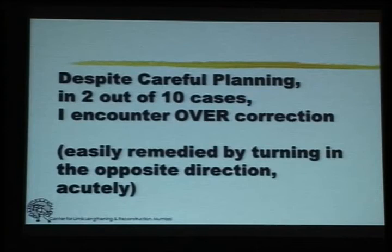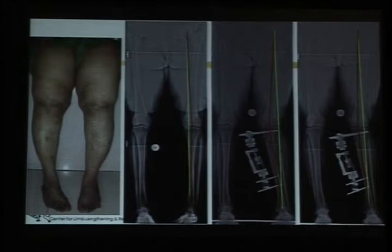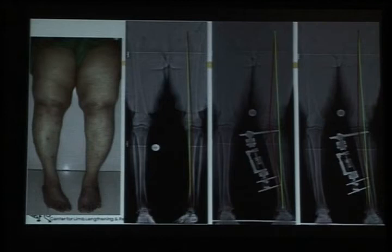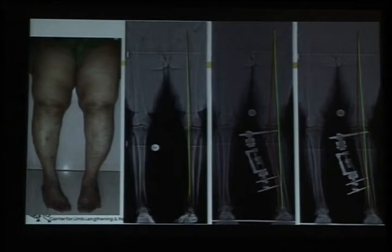In 20 percent of cases, even with planning, I find we have overcorrected. Like this patient where we did all the planning, determined the required millimeters of distraction and days of correction, then on the full-length x-ray the green weight-bearing line is way over onto the lateral side. With that much overcorrection, the patient's medial arthritis pain will resolve, but she runs the risk of developing lateral arthritis in the future. With the fixator, all we have to do is turn it in the reverse direction until the axis is perfectly correct.